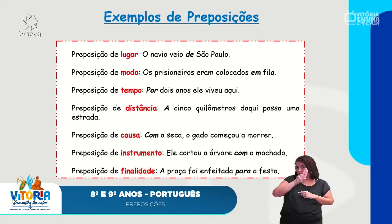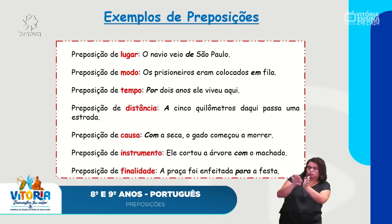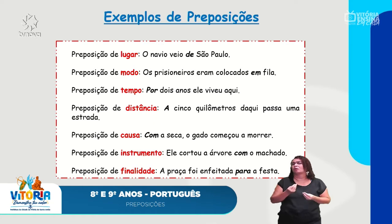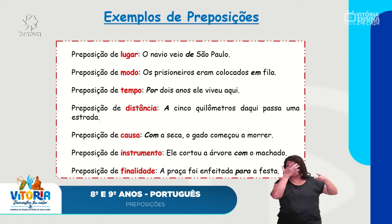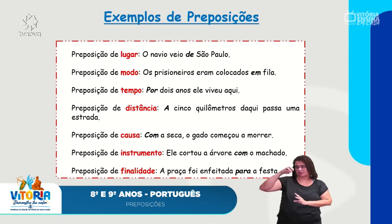Vamos ver a preposição de lugar: 'O navio veio de São Paulo.' Esse 'de' está indicando o lugar de onde o navio veio. De modo: 'Os prisioneiros eram colocados em fila.' Eles eram colocados de que forma? Em fila — indicando modo. A preposição pode ser classificada em vários tipos: lugar, modo, tempo, distância.